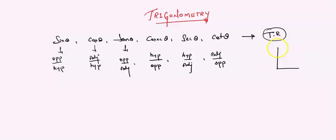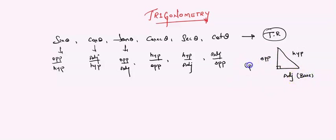I will be using these words while I am solving the problems. We call this side the hypotenuse, this side the adjacent, and this side the opposite. Most of you will use base and perpendicular — adjacent is nothing but base, opposite is nothing but perpendicular, and this is the hypotenuse side.